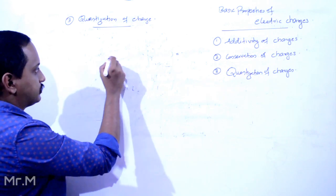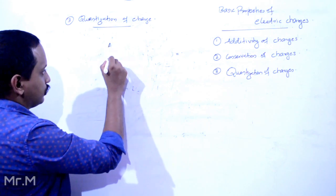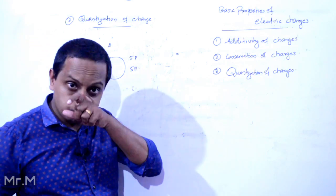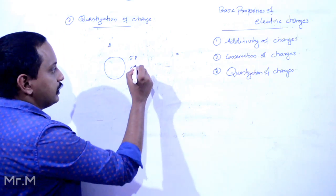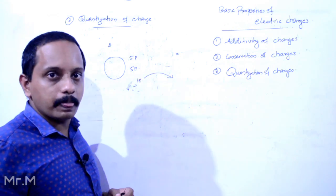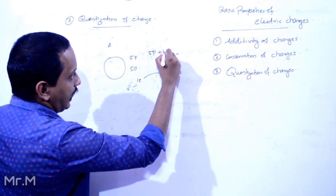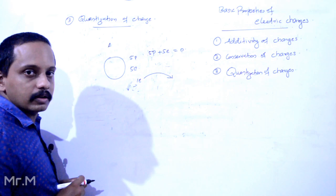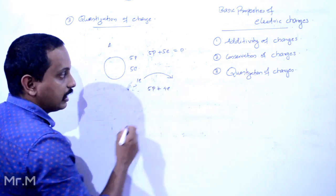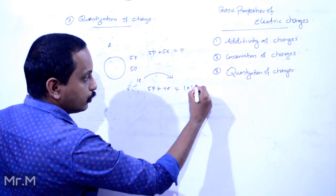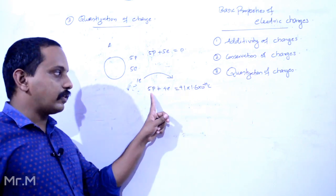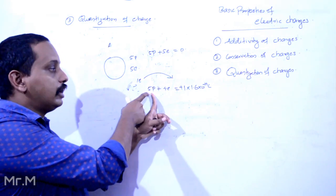There are two objects in my hand. One object has 5 protons and 5 electrons, so the total charge is zero — it is neutral. In the second case, one electron is lost. Then it has 5 protons and 4 electrons. There is an additional proton giving an excess charge. We add plus 1 into 1.6 into 10 raised to minus 19. There is one excess proton, so the charge is 1 times 1.6 into 10 raised to minus 19.